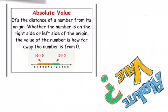Whether the number is on the right side or left side of the origin, the value of the number is how far away the number is from zero. I'm going to underline this part, and I want you to make sure that this resonates with you. The value of the number is how far away the number is from zero. Absolute value.